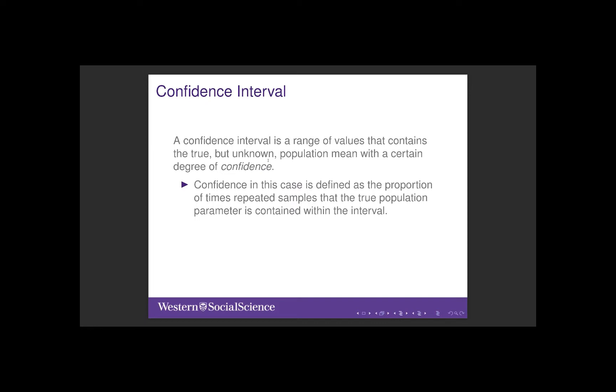If we calculated a 95% confidence interval, roughly 95% of the thousand intervals would contain the true but unknown population parameter. The others would not.